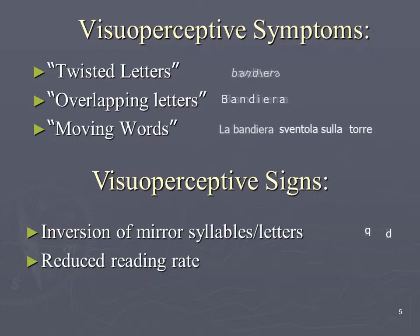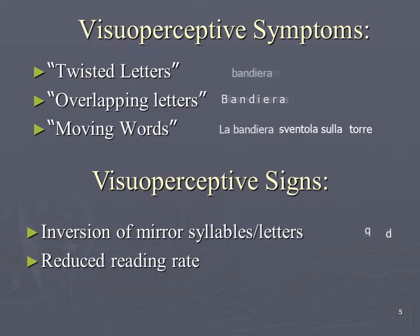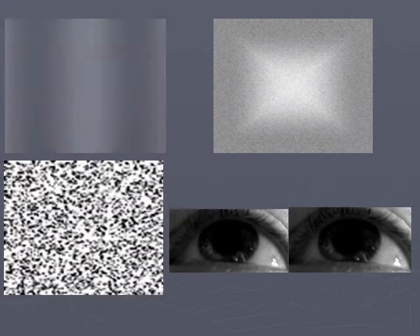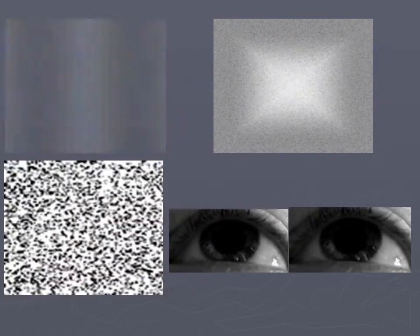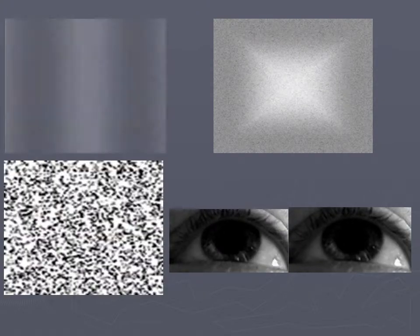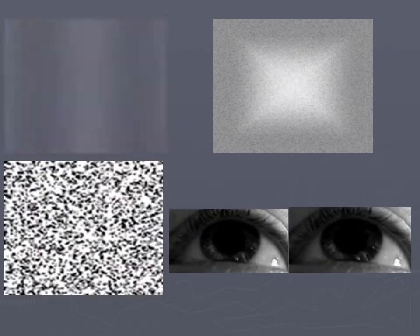Probably, the reason why the visual approach has been underestimated so far is that during an ordinary ophthalmological examination, dyslexic children turn out to be normal. Besides, it is restrictive to believe that just for this reason the patient does not conceal slight visuoperceptive alterations. In fact, they are not detectable by using the ordinary clinical approach, but could be revealed by specific psychophysical techniques.